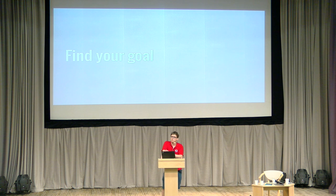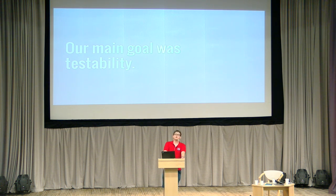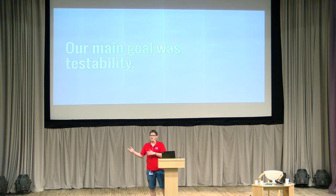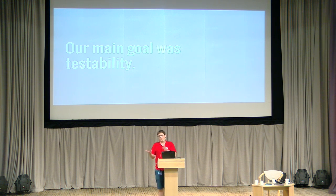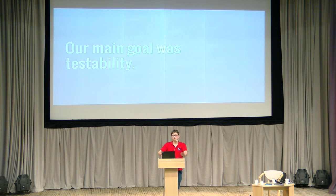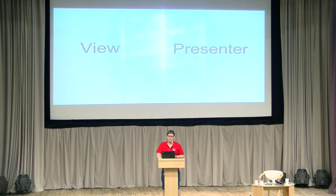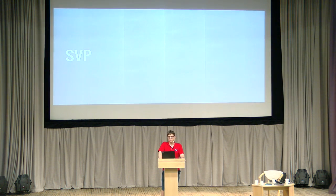Whenever you start implementing MVP, you need to find your goal. Our main goal was stability. We needed a point to stop layering our software — you can go up with layers, have 17 layers for some operation, but there's a point where you need to say 'okay, this is enough.' Our goal was stability and making code easily testable. Once we were there, we said it's simply enough to maintain and test — everyone is satisfied. How it works: view talks to presenter, presenter talks to 'stuff' — everything related to our application logic. It's SVP now.